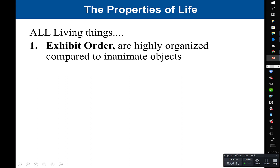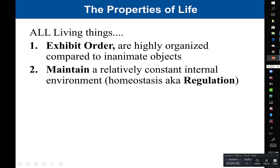First, all living things exhibit order — they are highly organized compared to inanimate objects. You'll see later that structure and function are related, so living things have a particular structure related to their function. Second, all living things maintain a relatively constant internal environment through what is called homeostasis — keeping the body the same through regulation.